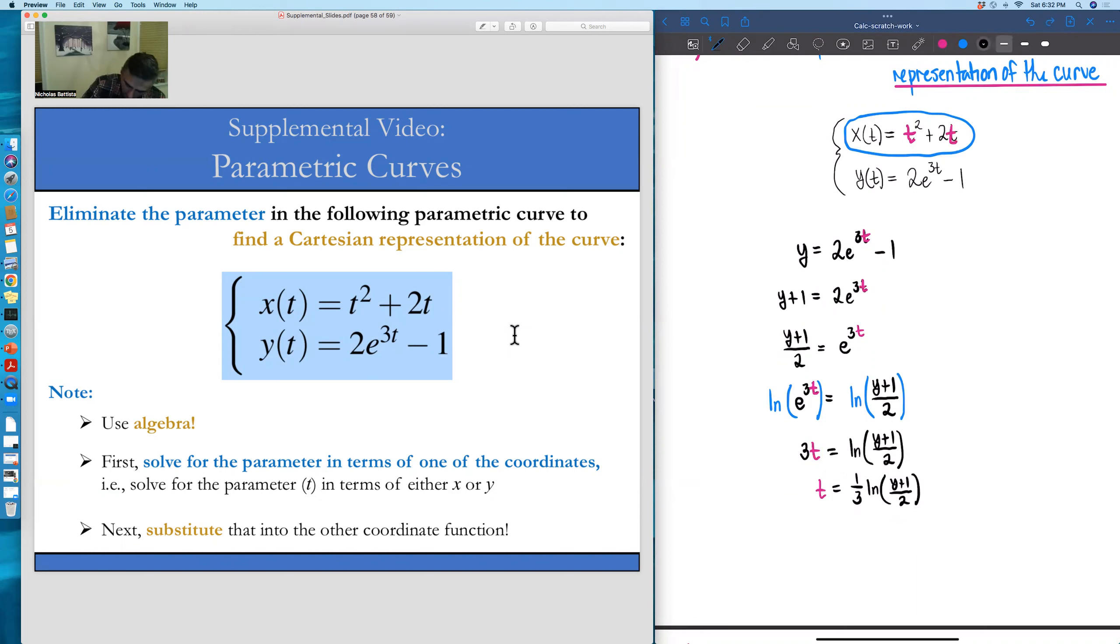So taking our x of t equation, we have x is equal to t squared plus 2t. And now we're just going to substitute in for those t's what we had for t from before.